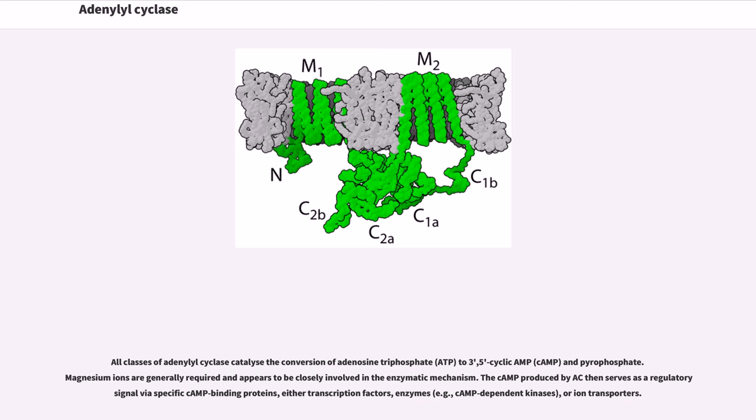All classes of adenylyl cyclase catalyze the conversion of adenosine triphosphate (ATP) to 3,5-cyclic AMP (cAMP) and pyrophosphate. Magnesium ions are generally required and appear to be closely involved in the enzymatic mechanism. The cAMP produced by AC then serves as a regulatory signal via specific cAMP binding proteins, either transcription factors, enzymes, for example cAMP-dependent kinases, or ion transporters.